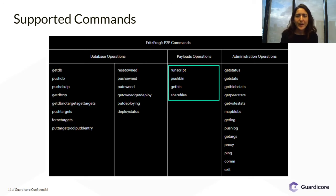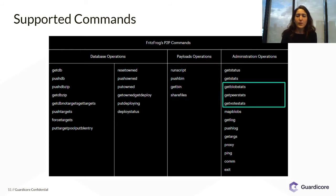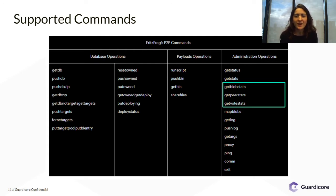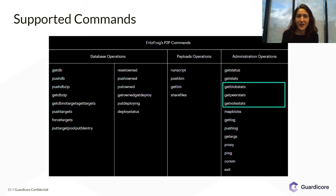With regards to payload operations, there were capabilities of running scripts, running different binary payloads, and sharing files. The most intriguing part was in the administration operations where we saw get blob stats, get peer stats, and get vote stats. The term 'peers' was not something I was used to seeing frequently in my investigations of botnets, so this kind of raised my eyebrows.